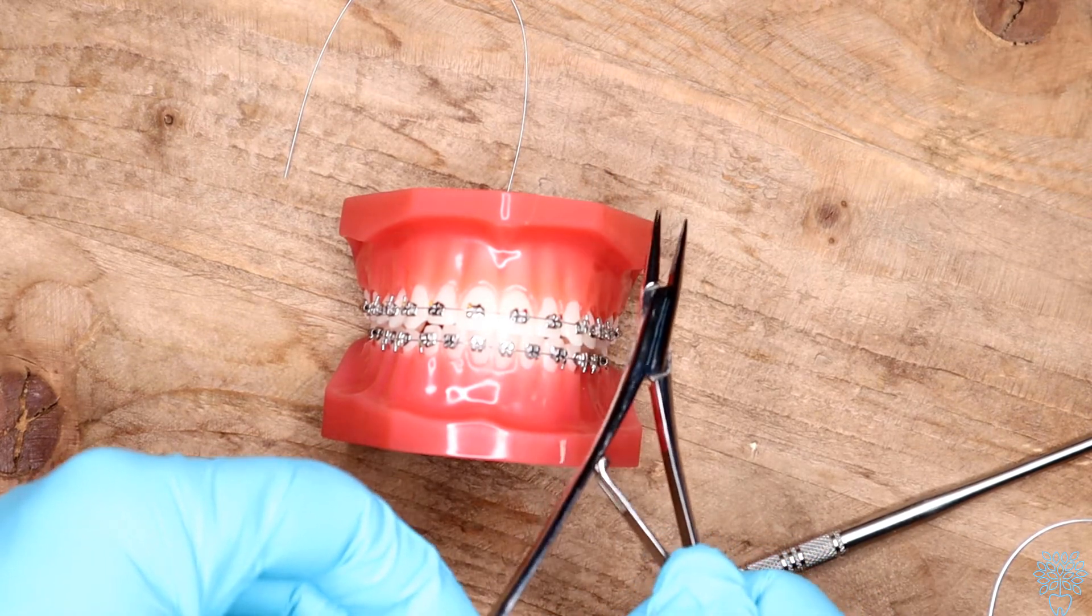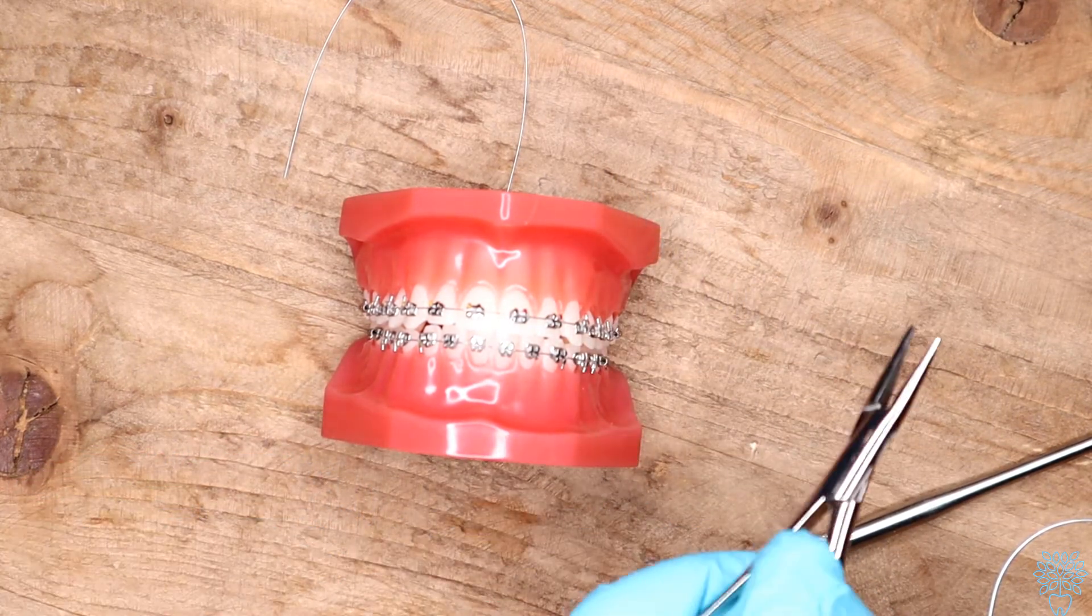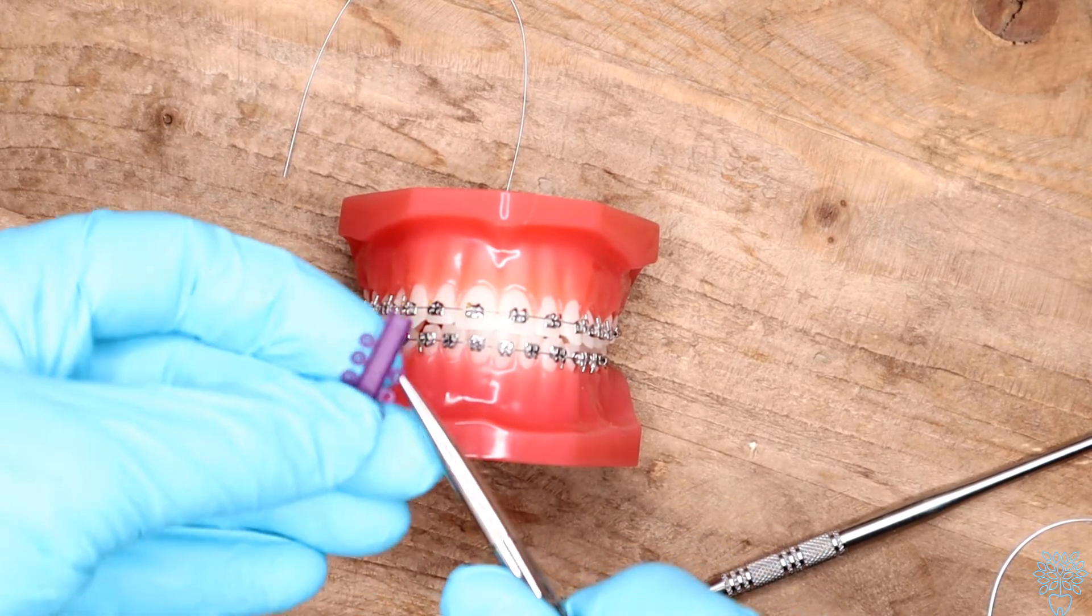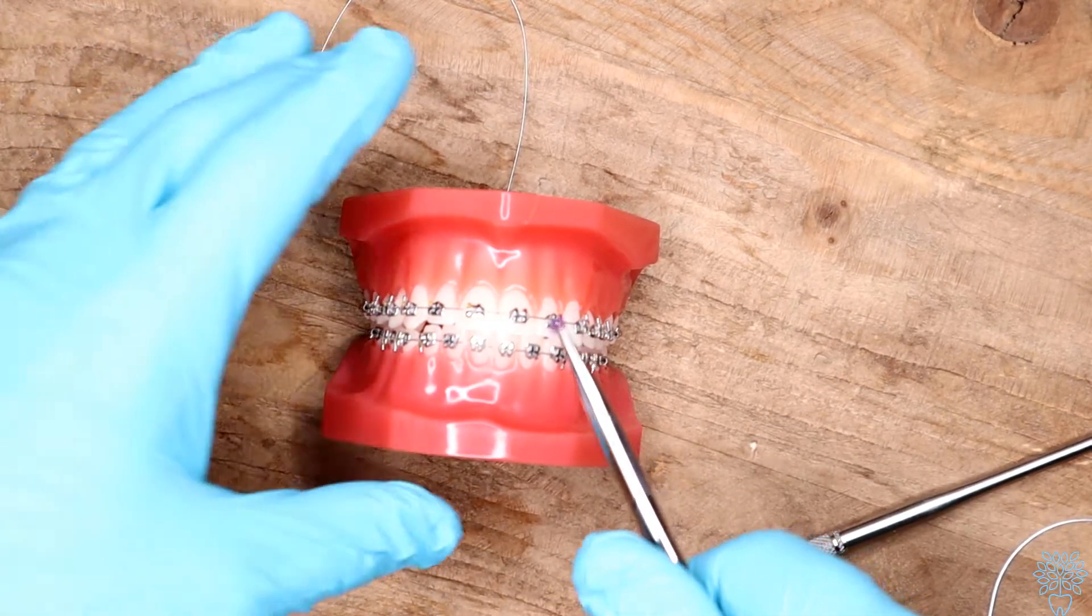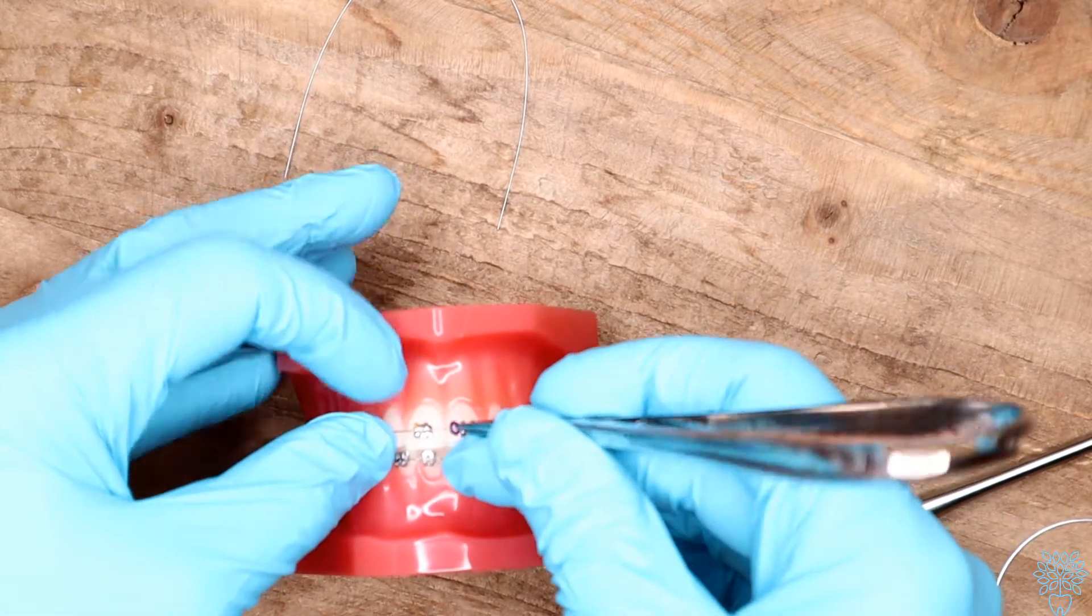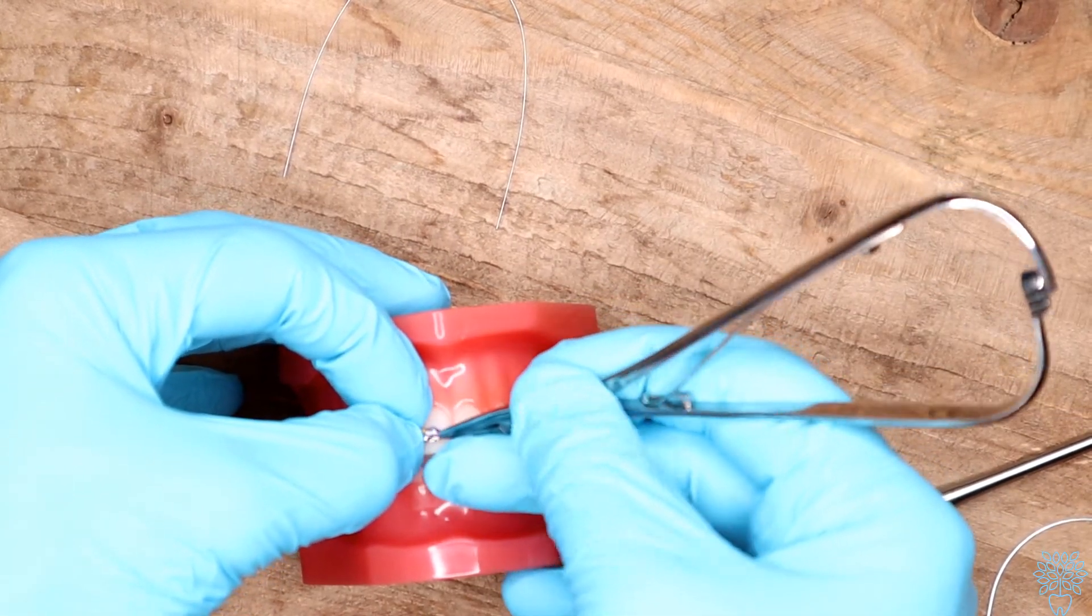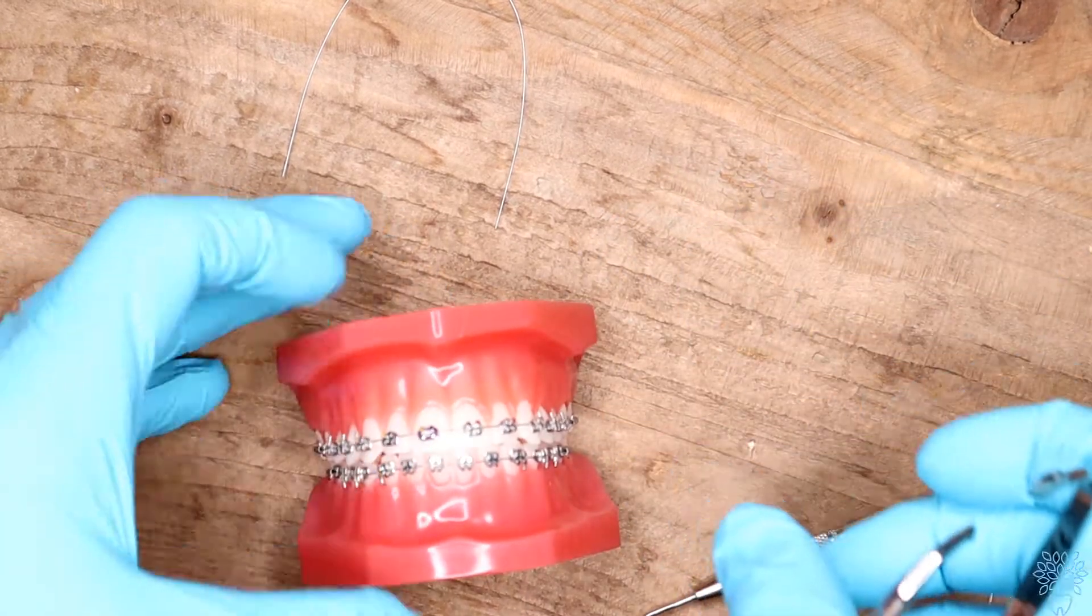And then we have the Mathews pliers. This is what we use to actually put on the colors. So the colors putting on is pretty easy. So normally we'll just grab them, grab a purple, just take it off the thing, and then we'll just put it on the tooth, or put it on the bracket.